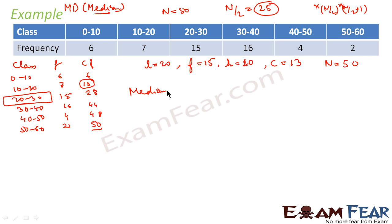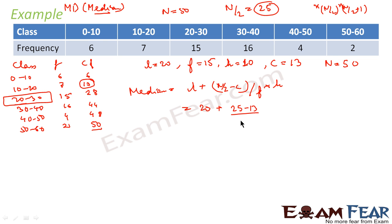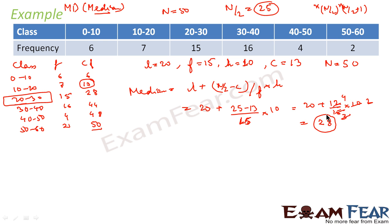Applying the formula: Median = l + (n/2 − c) / f × h. Substituting: 20 + (25 − 13) / 15 × 10 = 20 + 12/15 × 10 = 20 + 8 = 28. So the median is 28. With the median found, half the battle is done.